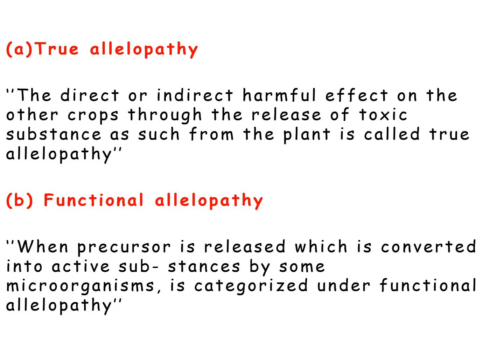Allelopathy released directly from the plant is called true allelopathy — where chemical substances are directly harmful and toxic. Functional allelopathy is when a precursor is released which is then converted into an active substance by some microorganisms.